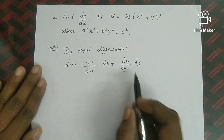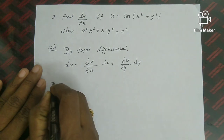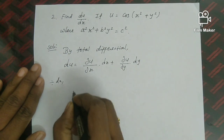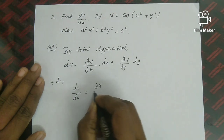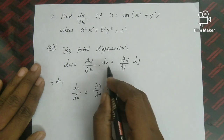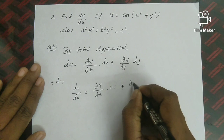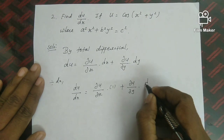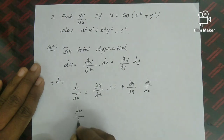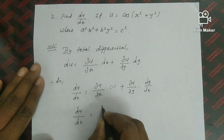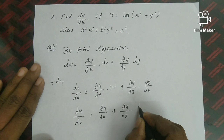By total differential, du = (∂u/∂x)dx + (∂u/∂y)dy. Dividing this entire equation by dx gives du/dx on the left-hand side. On the right-hand side: du/dx = (∂u/∂x)·(dx/dx) + (∂u/∂y)·(dy/dx). Since dx/dx = 1, we have du/dx = ∂u/∂x + (∂u/∂y)·(dy/dx).